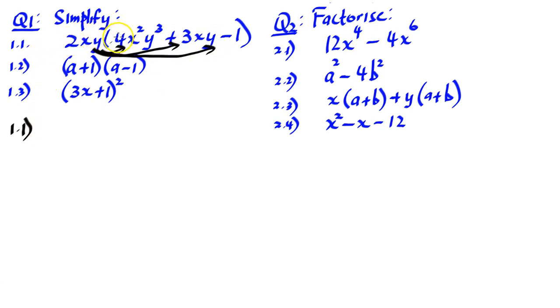Let's multiply: 2 times 4 is 8, x times x squared is x cubed, and y times y cubed is y to the power 4. When we are doing products, we need to know our laws of exponents, which means if we multiply common bases, we must add the indices.